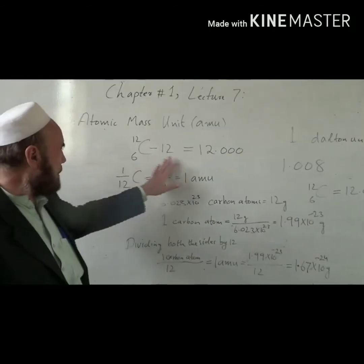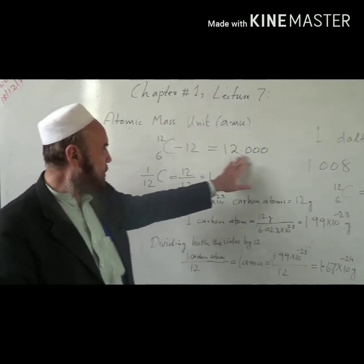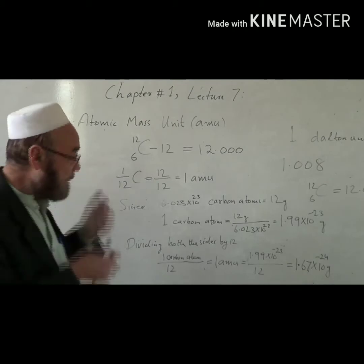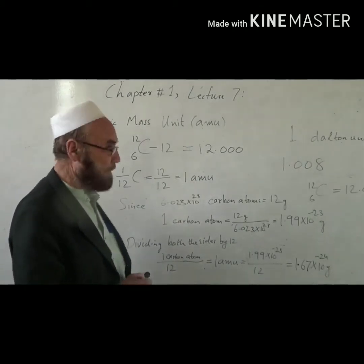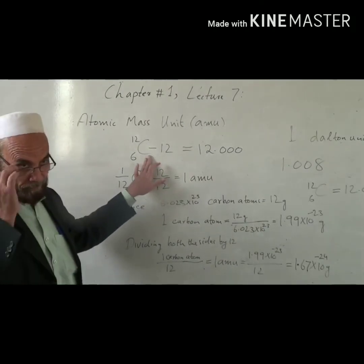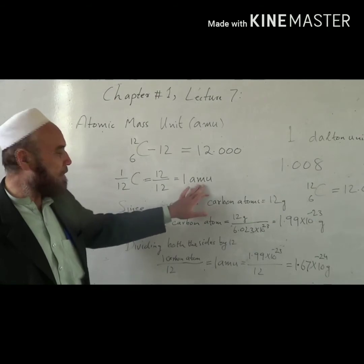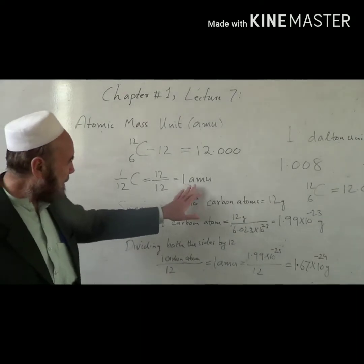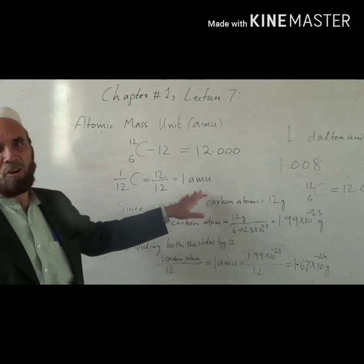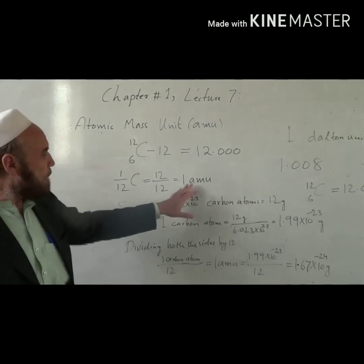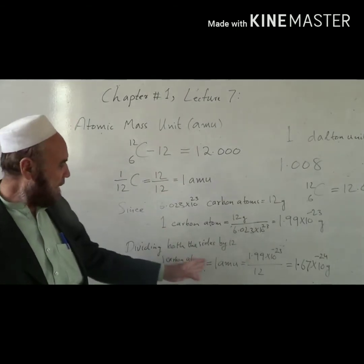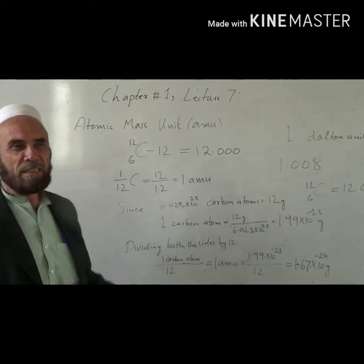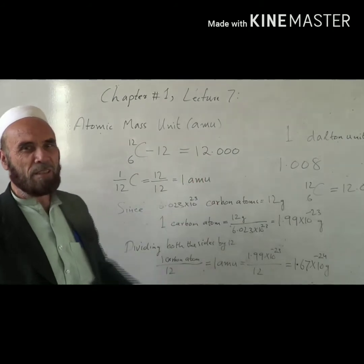Carbon isotope-12 has an atomic mass of 12.00. The 12th part of it — dividing by 12 — gives a single unit: 1 AMU. It is not the weight of a complete carbon atom; 1 AMU is a single unit comparable to a kilogram. More precisely, it is not a unit of mass — it is a comparison between two masses: the mass of the carbon atom divided by 12 per mole.